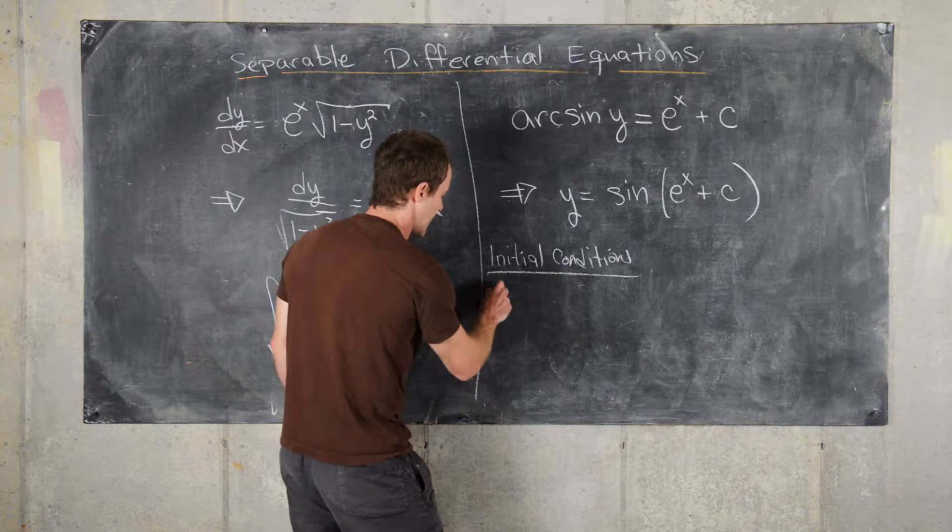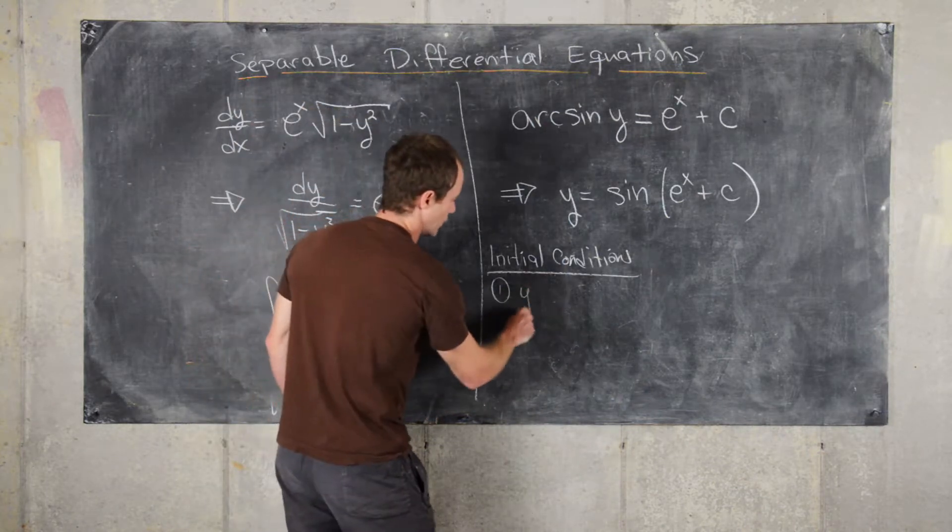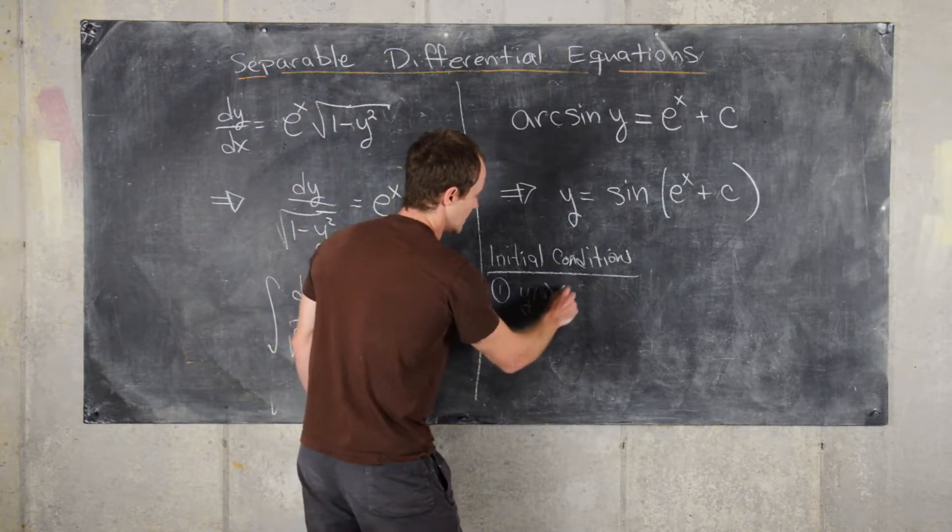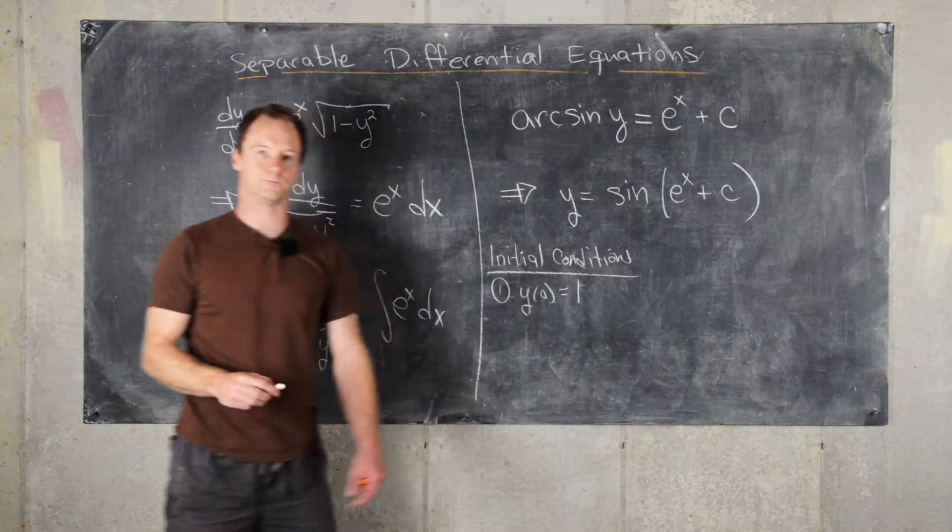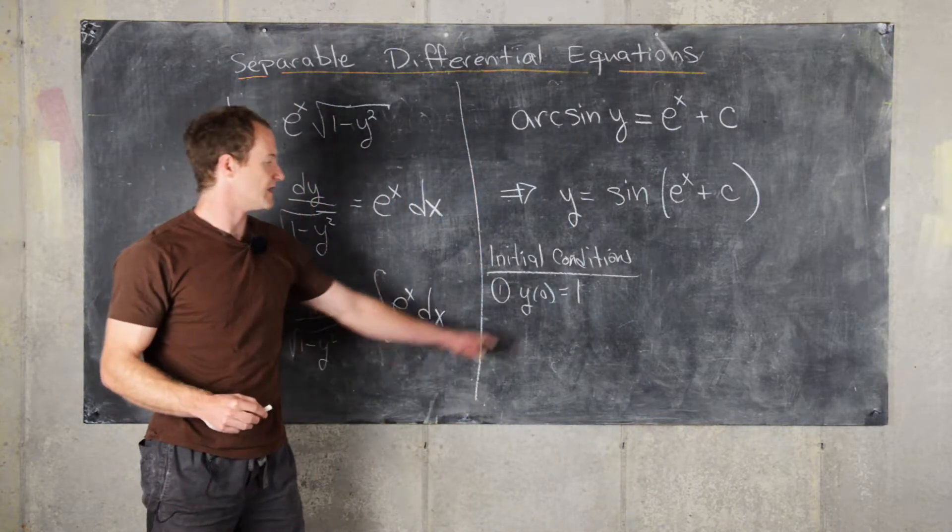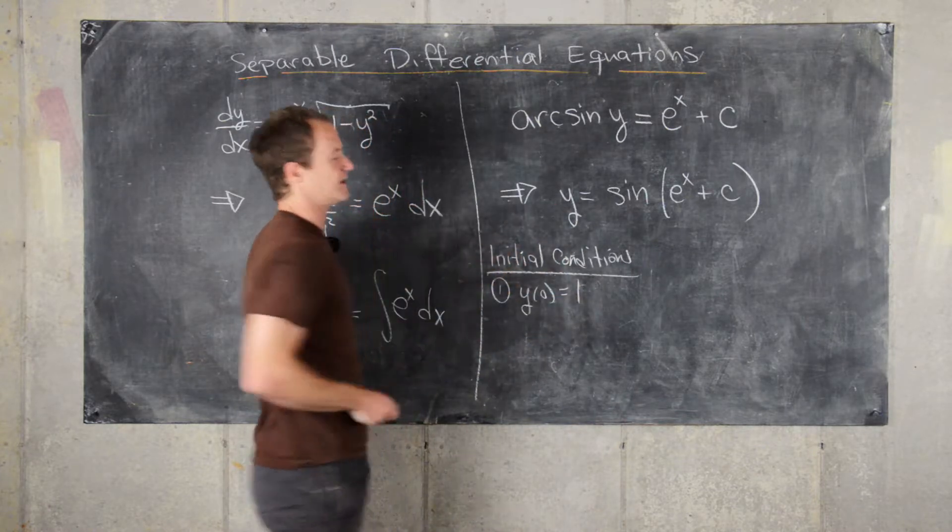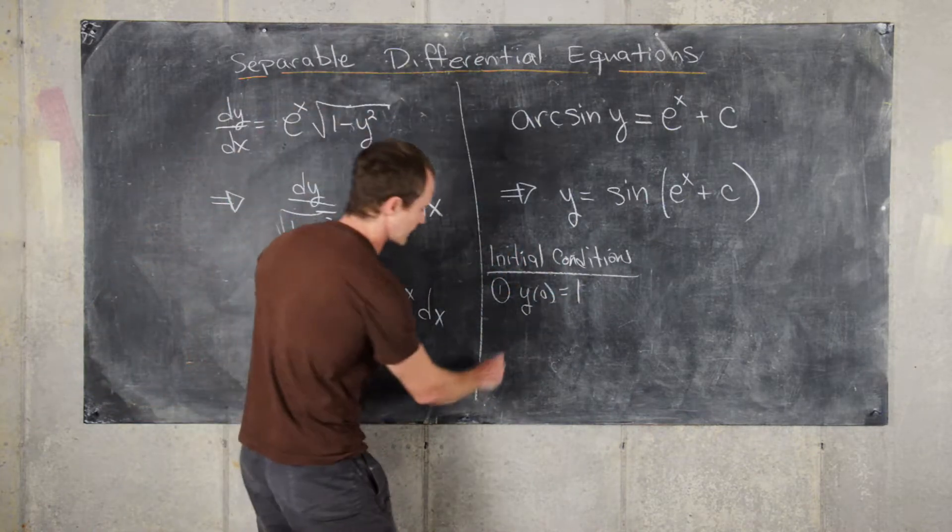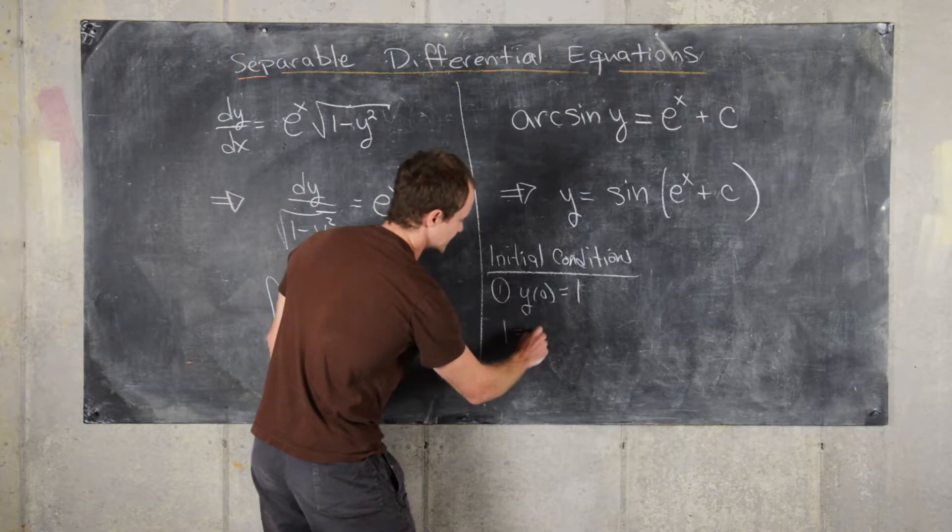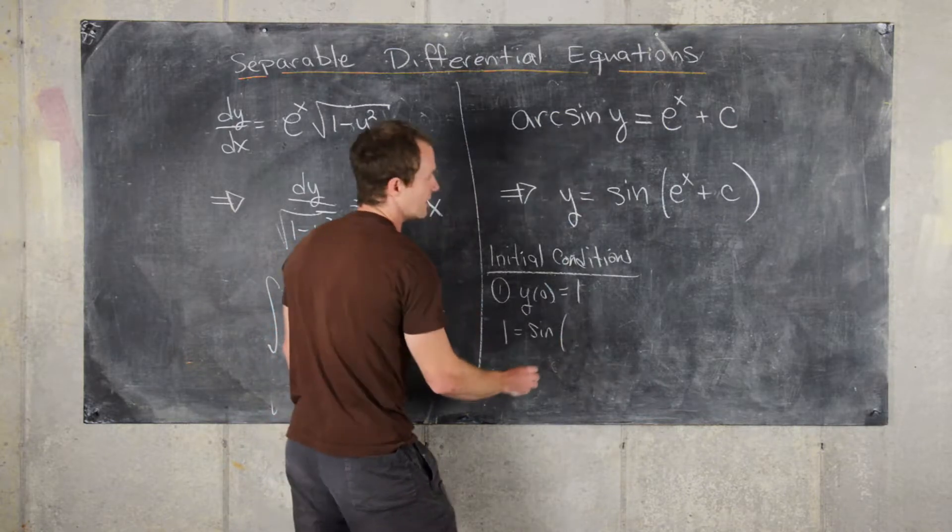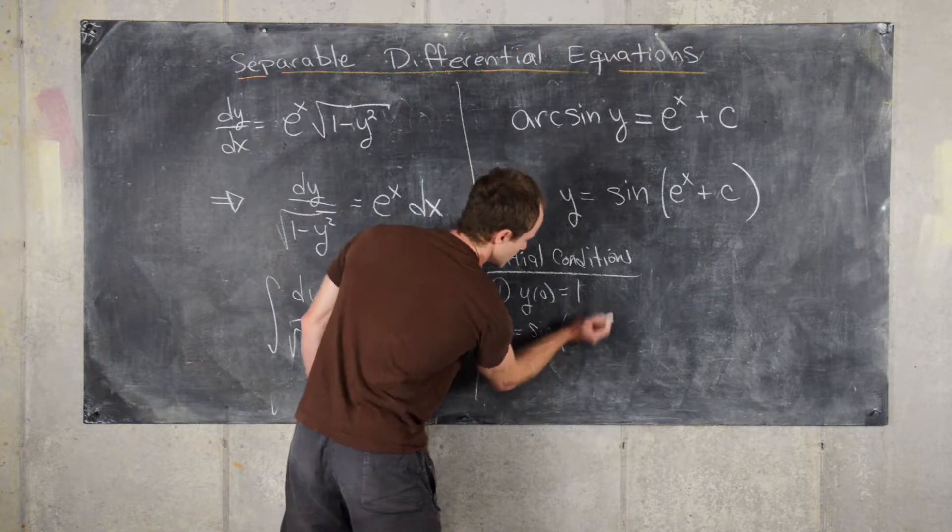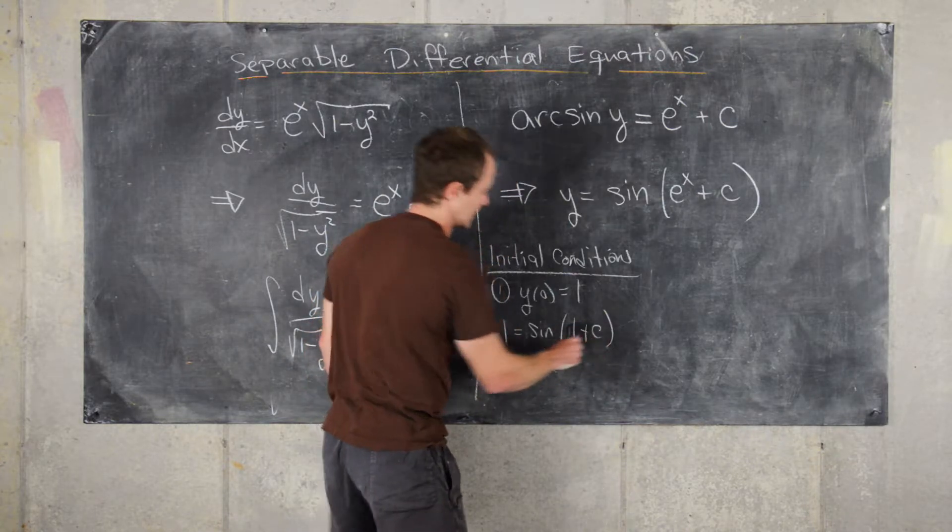So let's say our first initial condition was y of 0 equals 1. So let's see. That means we'll plug in the point into this equation. So that will give us 1 equals sine of e to the 0, which is 1 plus a constant.